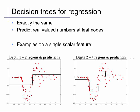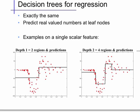Decision trees can be used for regression in almost exactly the same way. Instead of outputting a discrete class value, we output a real-valued number at the leaf nodes, since our prediction y is over some real-valued set. The functions look essentially the same — with a single feature x and a single depth, we partition the feature space into two parts, each with its own real-valued prediction. For a depth-2 tree, we divide the feature space into up to four regions based on thresholds, each with a different real-valued prediction.